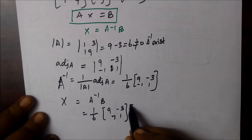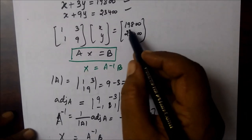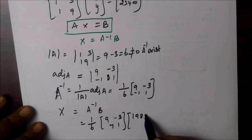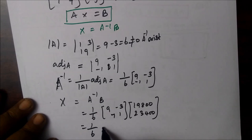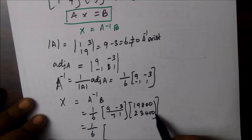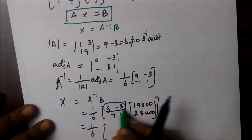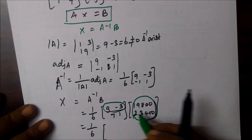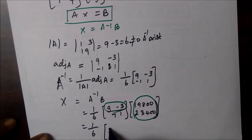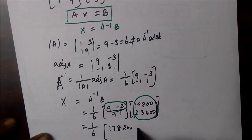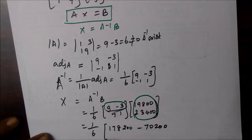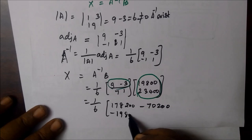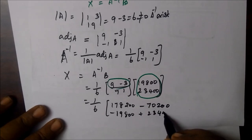So x equals A inverse times B. A inverse B is 1 over 6 times [9, -3; -1, 1] multiplied by B, which is [19,800; 23,400]. Multiplying gives a 2×1 column vector. The first entry is 9×19,800 minus 3×23,400, which is 178,200 minus 70,200 = 108,000. The second entry is -1×19,800 plus 1×23,400 = 3,600 plus 800.